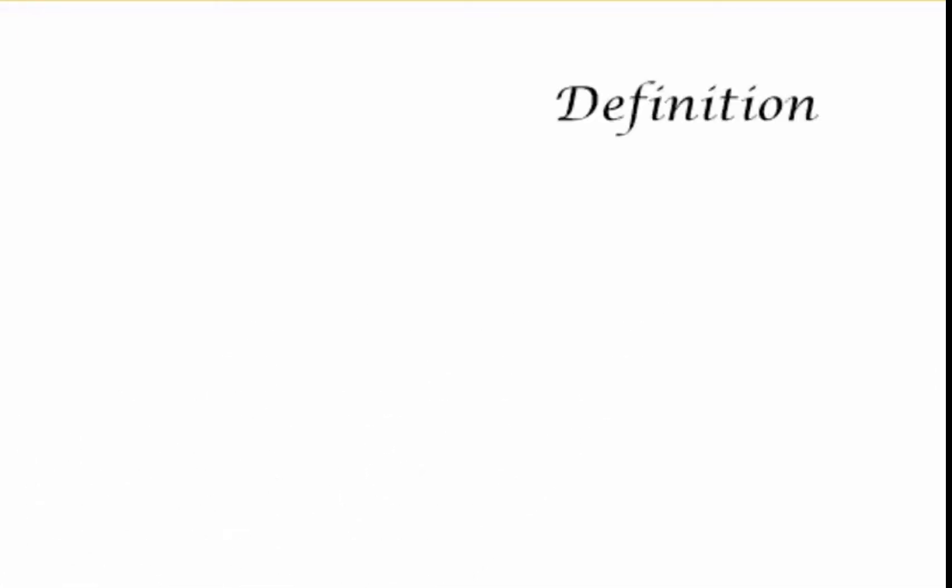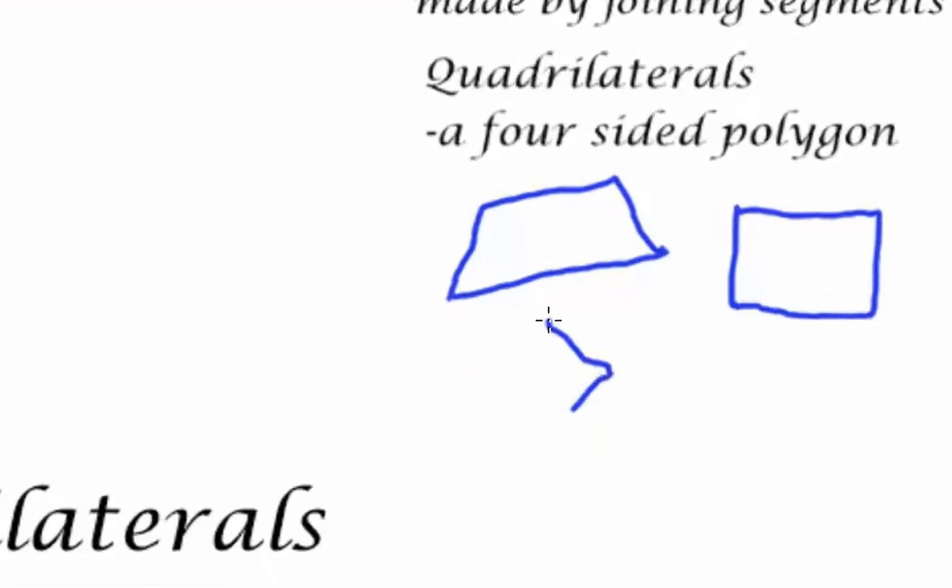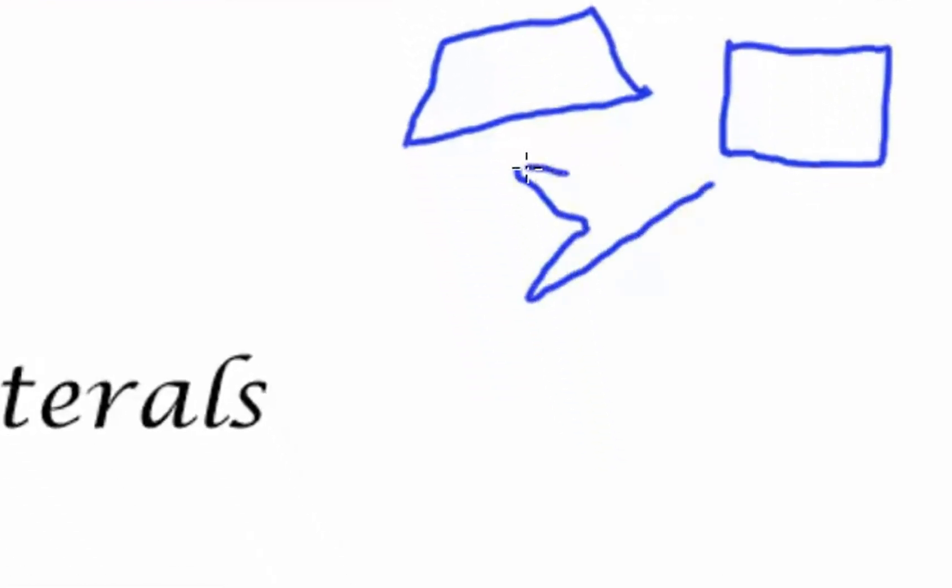By definition we first must talk about a polygon and how a polygon is a closed figure made by joining segments. A quadrilateral is then a four-sided polygon. As I will draw here you see that I can draw this four-sided figure, this four-sided figure that might look like a rectangle, and then even this different type of polygon but with the four sides it classifies as a quadrilateral.